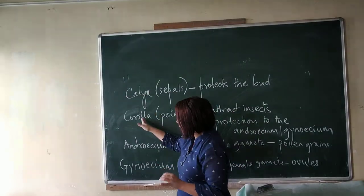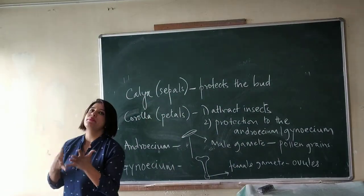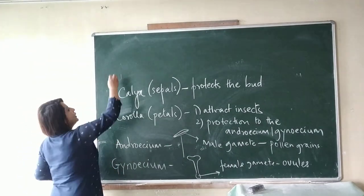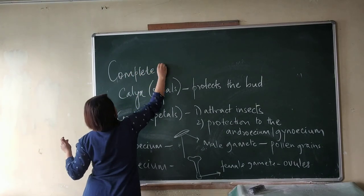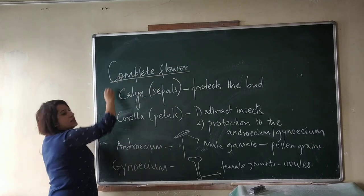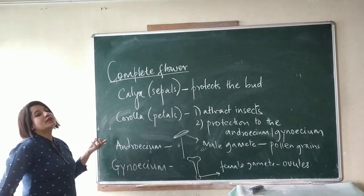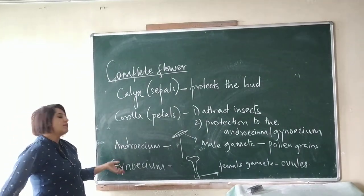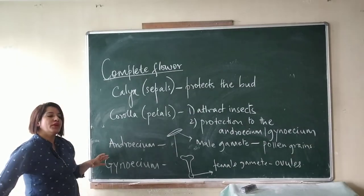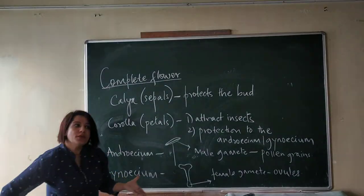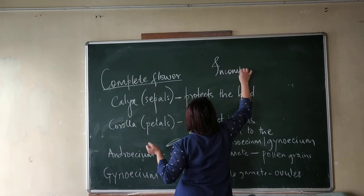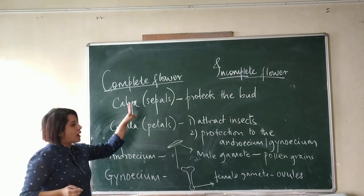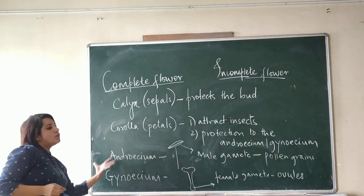Now we see that all flowers do not have all four whorls — they may or may not have all four. So if a flower has all four whorls, we call it a complete flower. In some flowers, the calyx, petals, androecium, or gynoecium may be missing. If even one whorl is not present, we call it an incomplete flower.